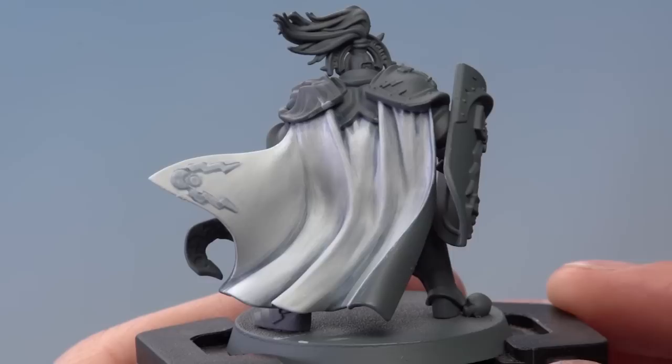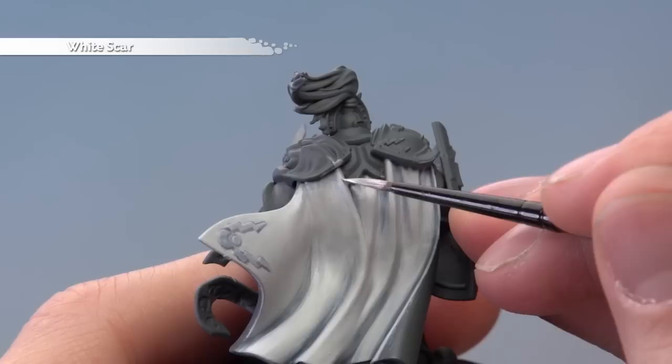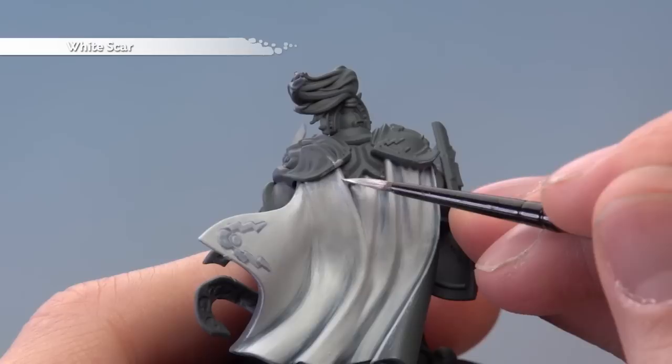Neatening up any mistakes, and with that done we can then move on to highlighting using White Scar. For this step what you want to do is just follow along all the tops of the creases with a line of this color like this, but also be sure to go all the way around the outside of the cloak as well.